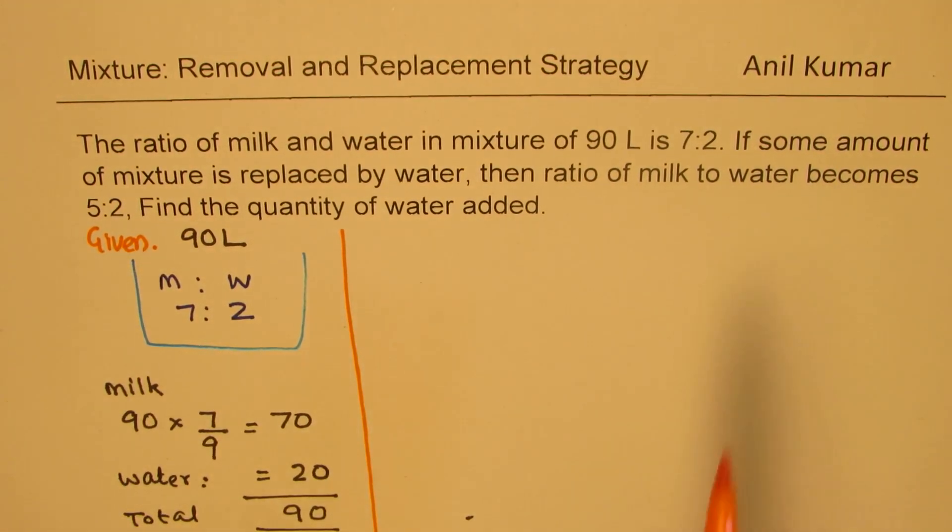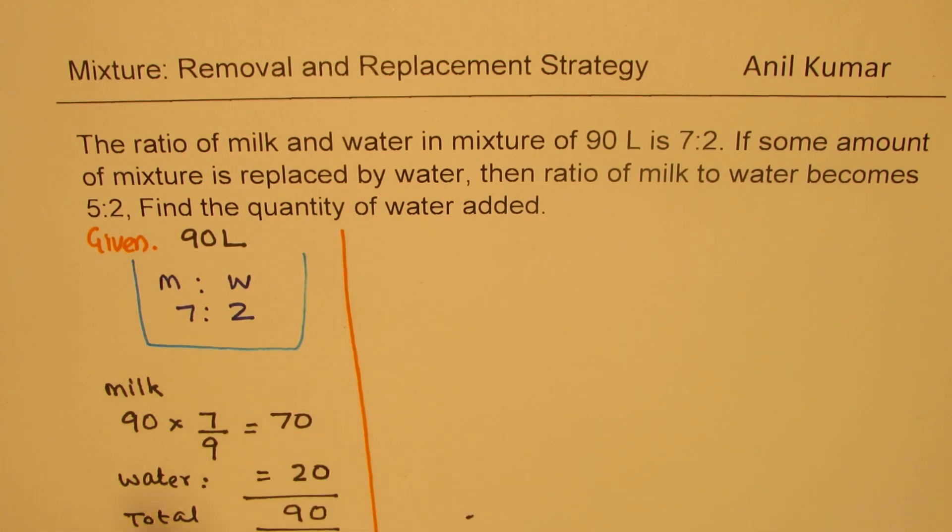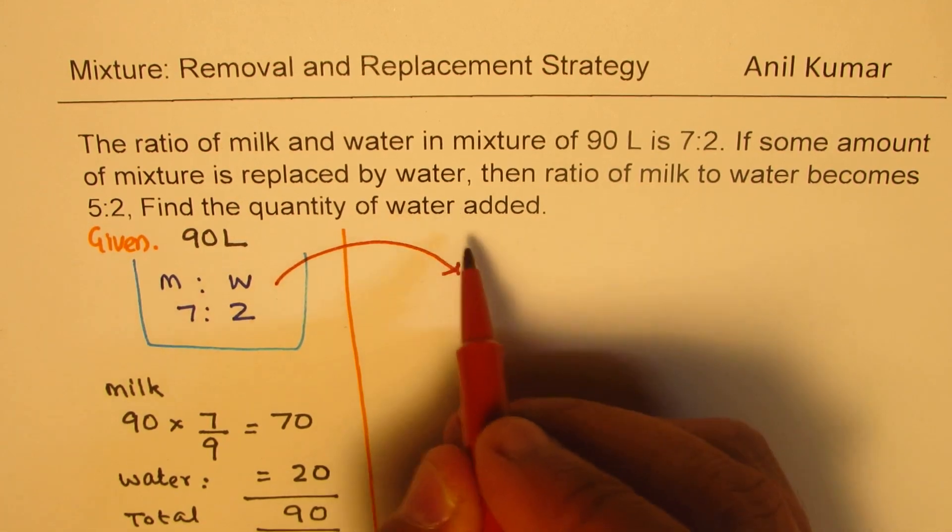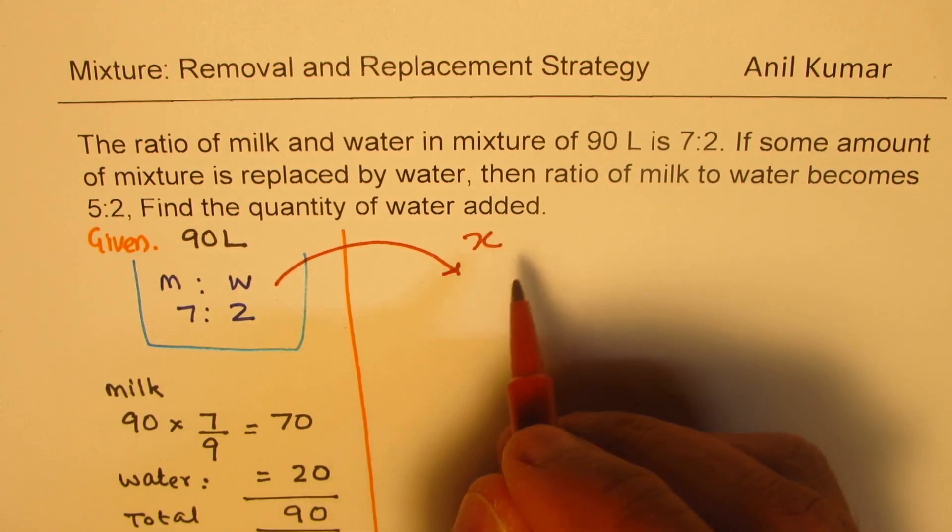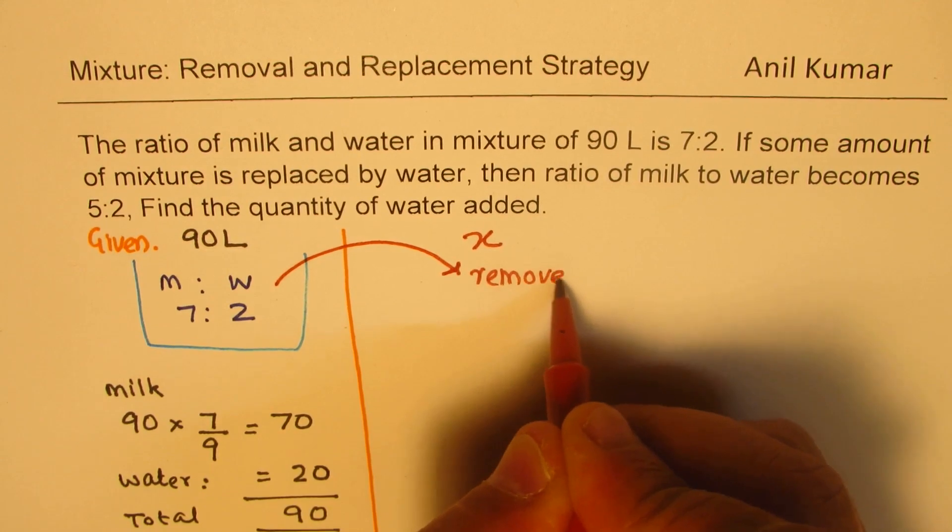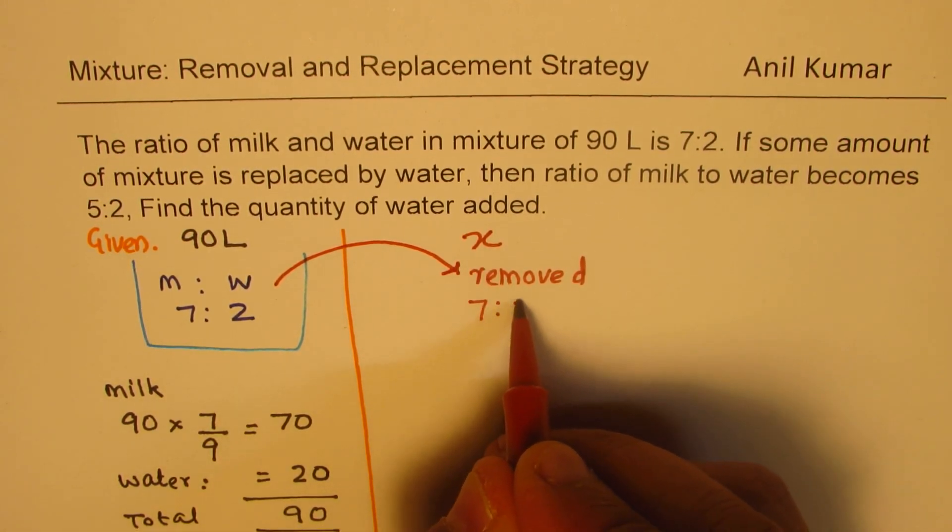Now what is being done? If some amount of mixture is replaced by water, that is to say that we are taking away, let us say x quantity. So x is removed. Now if x is removed, then the ratio in which water and milk will be removed will also be 7:2 ratio.